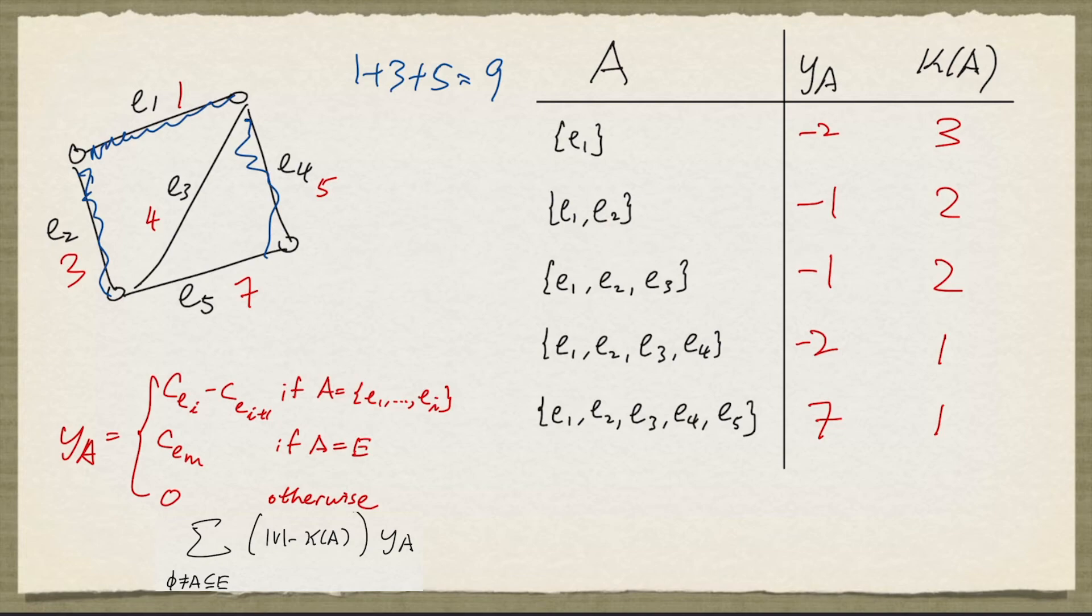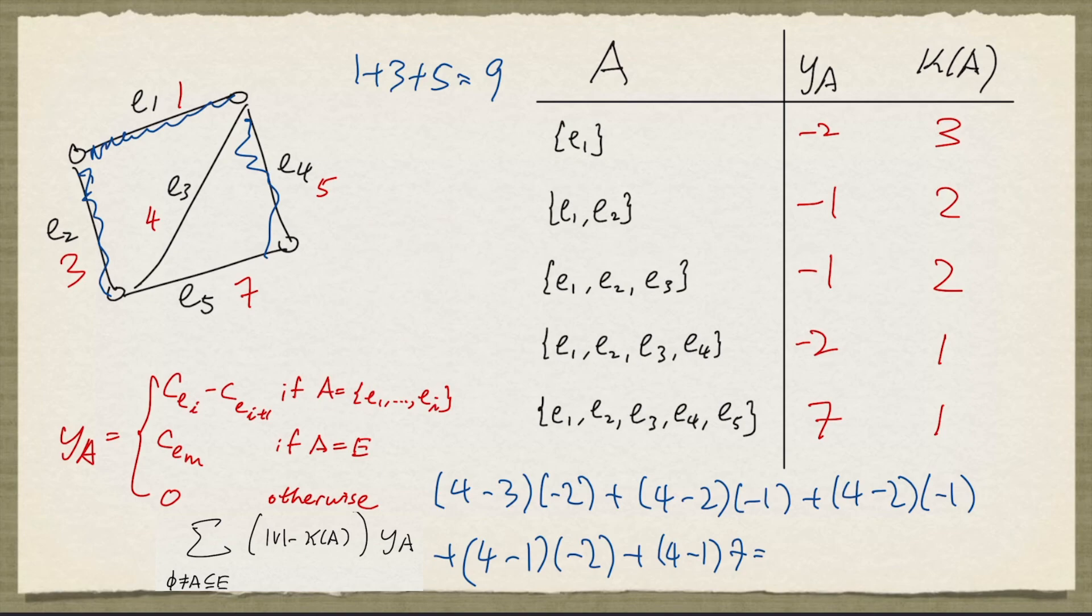So let's work out the objective function value of this dual solution. So the number of nodes in the graph is 4. So we'll have 4 minus 3 times negative 2 plus 4 minus 2 times negative 1 plus 4 minus 2 times negative 1 plus 4 minus 1 times negative 2 plus 4 minus 1 times 7. And that works out to be negative 2 minus 2 minus 2 minus 6 plus 21. And that's 9, which is equal to the weight of the spanning tree.